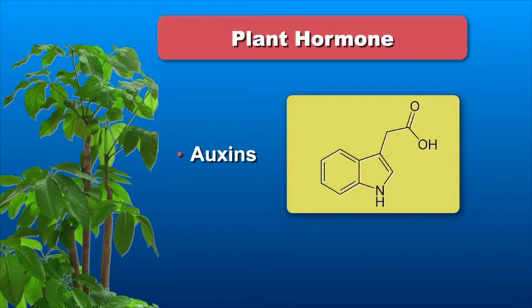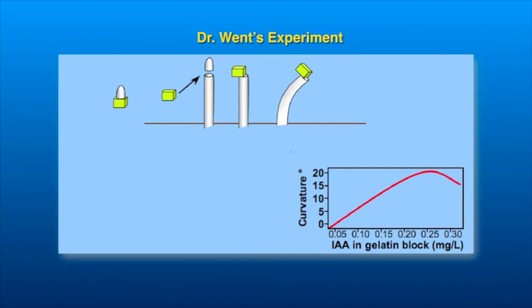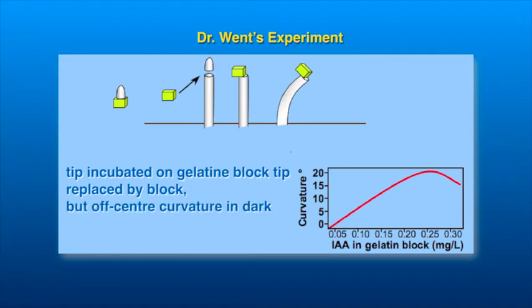Auxin was identified and named by Dr. Fritz Wendt in 1926. In classical experiments by Wendt and others before him, it was known that a chemical signal synthesized in the coleoptile tip moved downwards and triggered coleoptile growth. If the concentration gradient was asymmetrical, it led to curvature of coleoptiles, since one side received more auxin than the other and hence grew more than the latter.